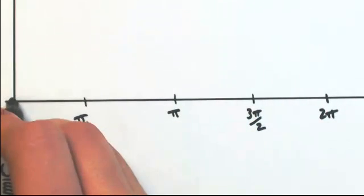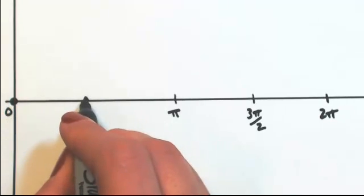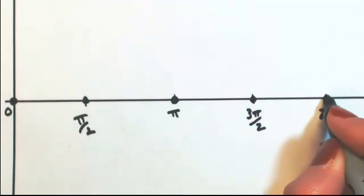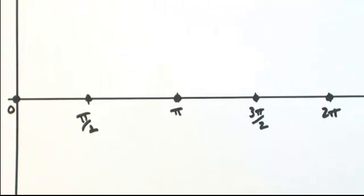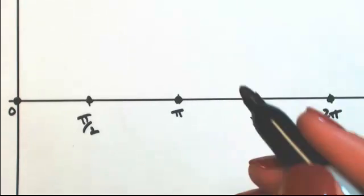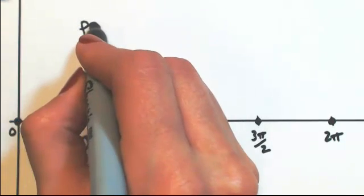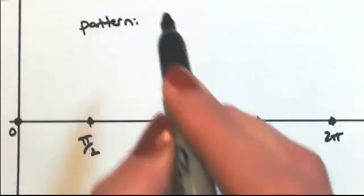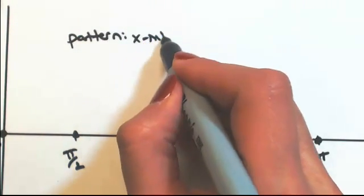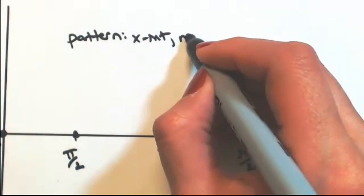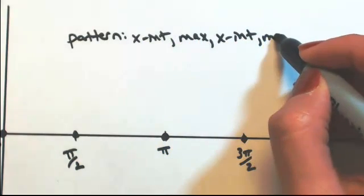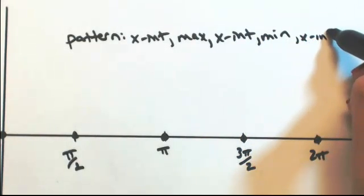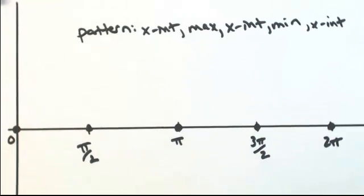At each of these, we got 0. So that's not really telling us much, but if we remember that the sine function has a certain pattern that starts at an x-intercept, and then it goes up to a max, back down to an x-intercept, still going down to a min, and then ending at an x-intercept. We can actually fill in the blanks here.